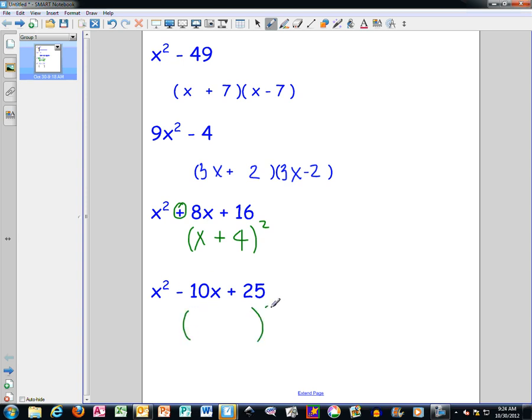So again, I'm going to have one set of parentheses with a square root outside. Whatever this sign is will be in my parentheses. And then I need to figure out the square root of x squared, which is x. And the square root of 25, which is 5. So the answer to this one is x minus 5 squared.